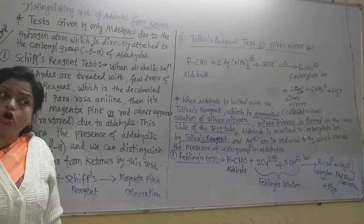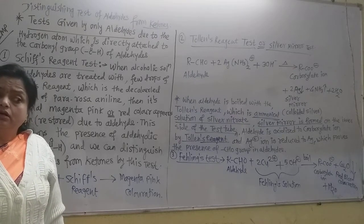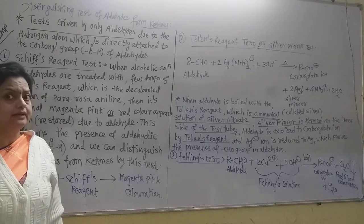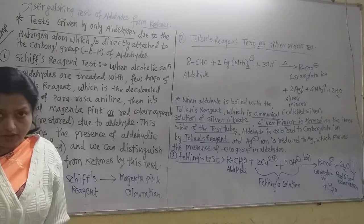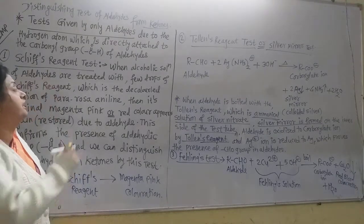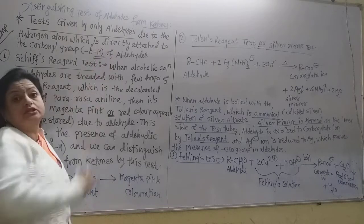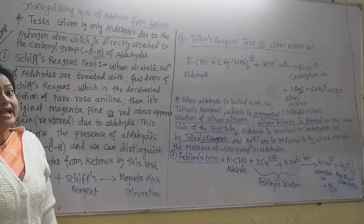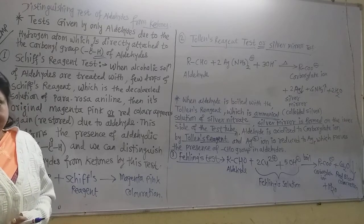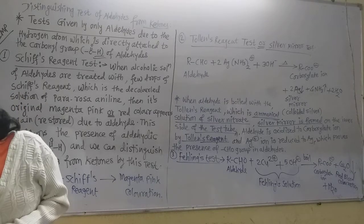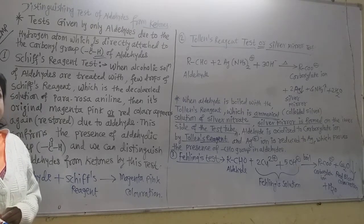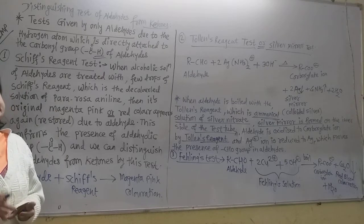In ketones, to both sides of the carbonyl group there are alkyl groups. But in aldehydes there is hydrogen, and due to that hydrogen, aldehydes can reduce some compounds — Schiff's reagent, Tollens' reagent, and Fehling's solution. Aldehydes can reduce these compounds.